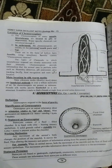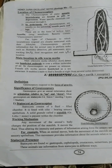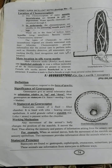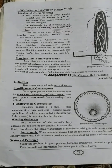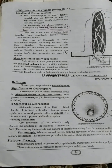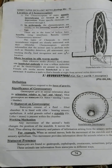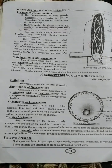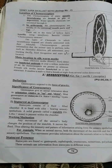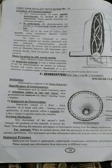Statocysts are found in gastropods, cephalopods, crustaceans, nematines, polychaetes, and ctenophores. These animals use information from statocysts in different ways, including orientation within a substratum and orientation in deep water at night.